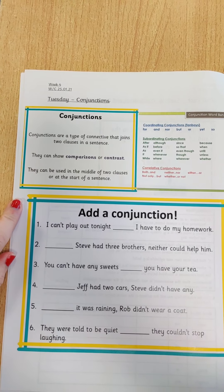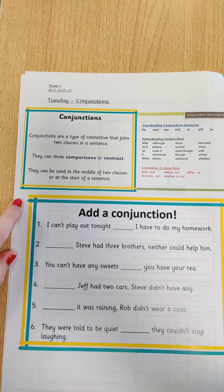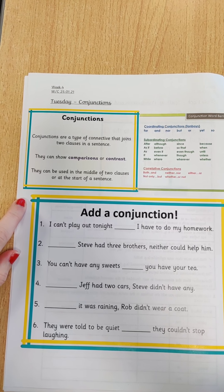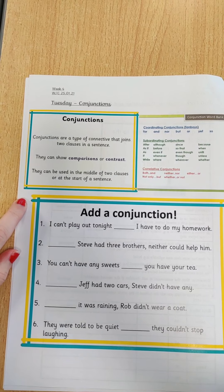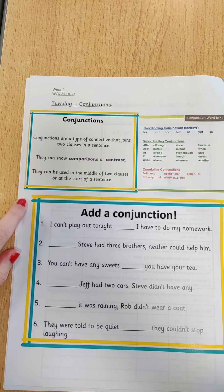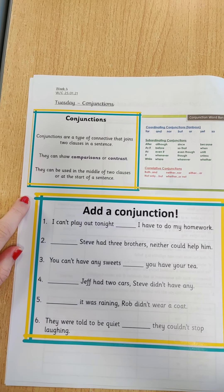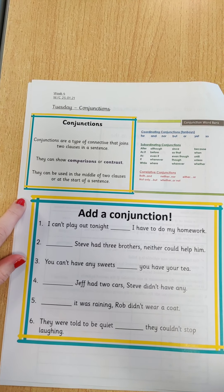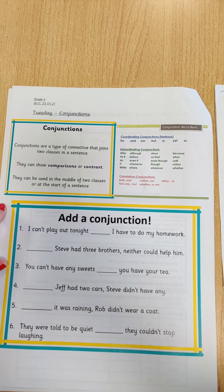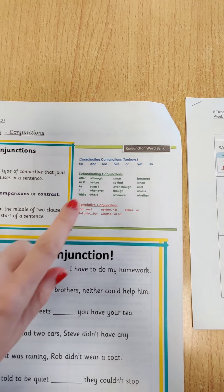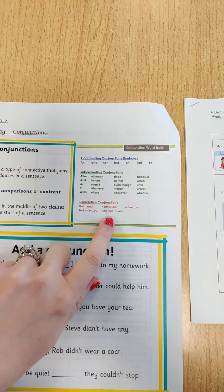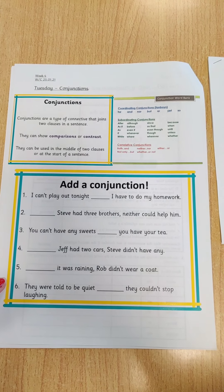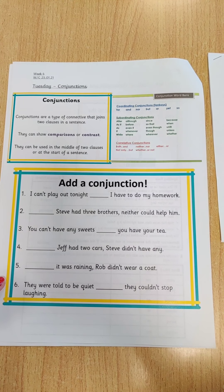Conjunctions are a type of connective that joins two clauses in a sentence. They show comparison or contrast. They can be used in the middle of two clauses or at the start of a sentence. Have a look at the examples here — there are all different types of conjunctions, and then this is your activity for today.